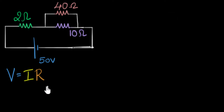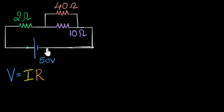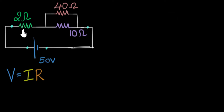Why is that wrong? When we apply Ohm's law, V is the potential difference across that resistor. For the two ohm resistor, I need to know the potential difference across two ohms — but I don't know that. 50 volt is the potential difference across those two outer points. I don't know the potential difference across the two ohm, the 10 ohm, or the 40 ohm resistors individually. If you substitute V as 50 for each resistor, you're implying 50 volts is the potential difference across each — which is clearly wrong.